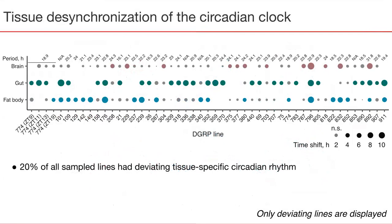Indeed, we found that 20% of sampled fly lines have tissue-specific circadian clocks deviating from expected biological time, which are displayed on this plot. The absolute time of deviation is reflected in the circle size, and for some genotypes it reached even 10 hours — for example, for genotype 796. Translated to humans, such a change in circadian rhythm would be equal to a person waking up and feeling rested but not hungry at all, because their gut clock is 10 hours late.